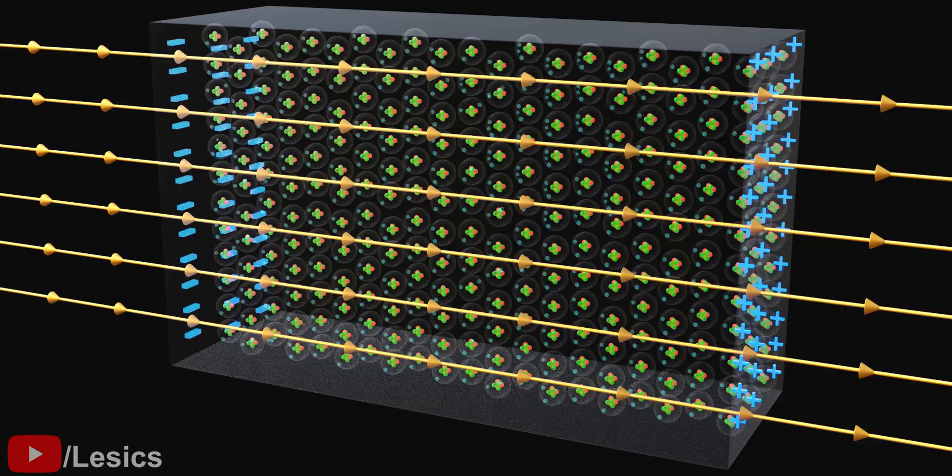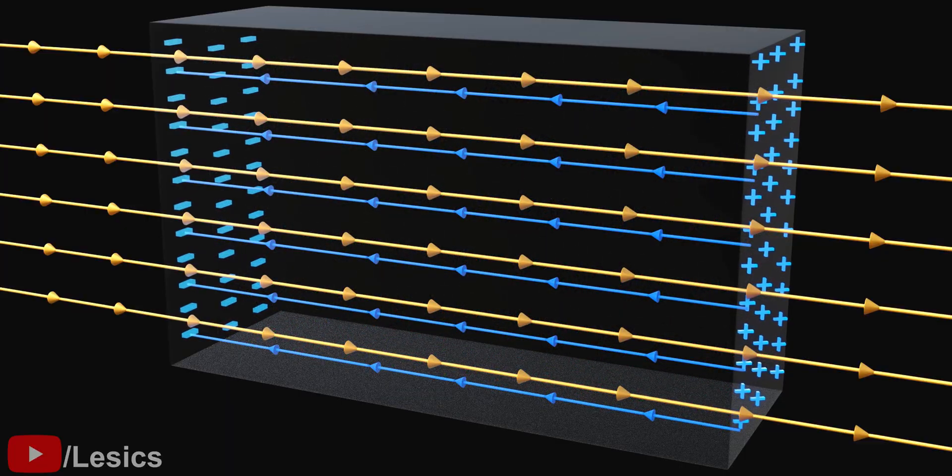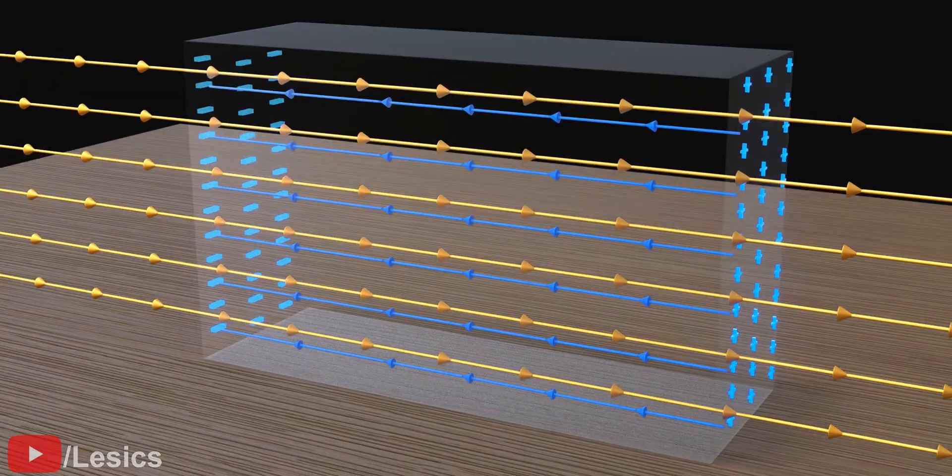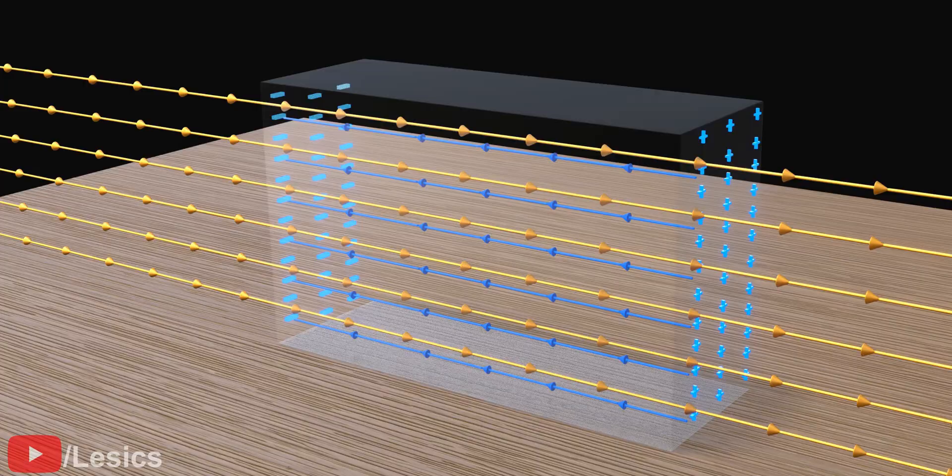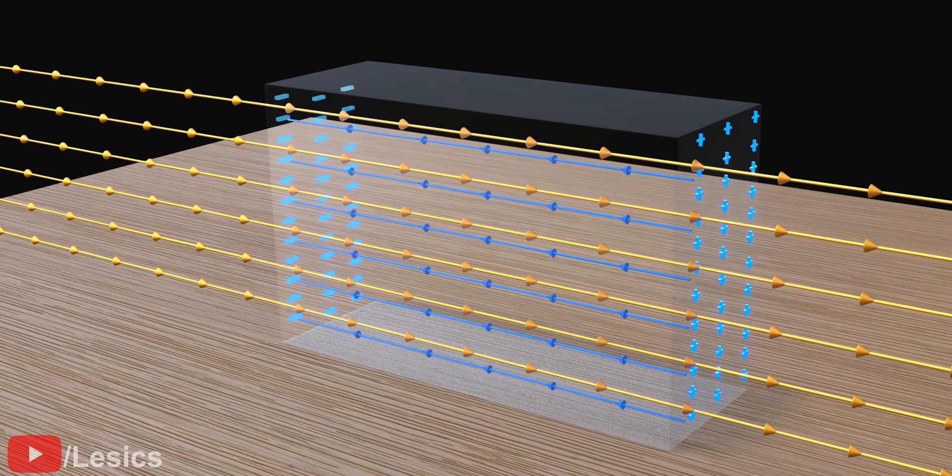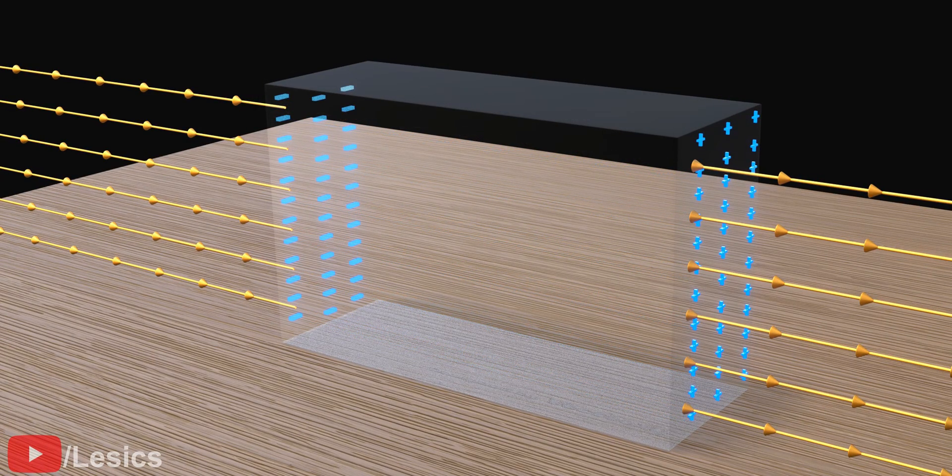These newly formed charged surfaces will generate another electric field. The electron displacement will happen until the newly formed electric field exactly cancels the external electric field, which is a fundamental property of metal. Metal will always rearrange its electrons and make sure that its net electric field is zero.